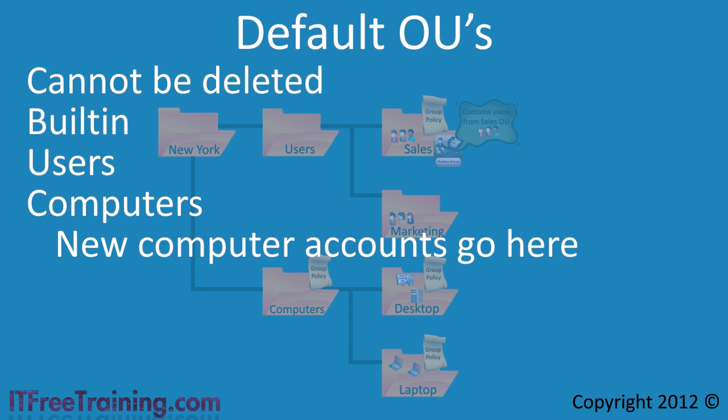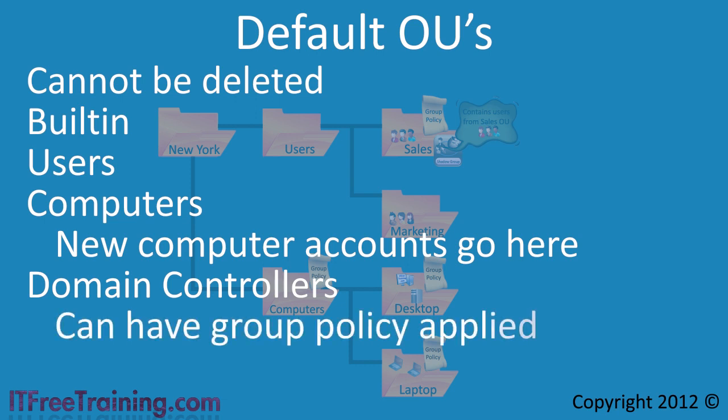The last default OU is Domain Controllers. The Domain Controllers OU contains all the computer accounts for all the domain controllers for that domain. Unlike the other OUs, Group Policy can be applied to this OU. Now that all the theory on Organizational Units has been covered, I will now change to my Windows Server 2008 R2 Domain Controller to look at how to use Organizational Units.